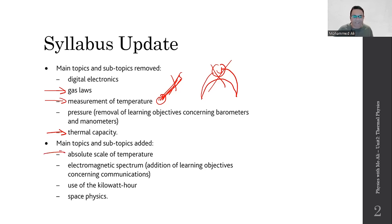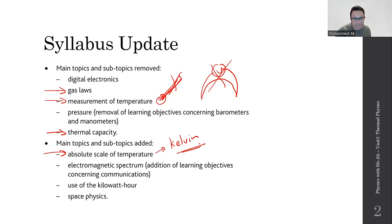They've also removed the mention of thermal capacity or heat capacity — not specific heat capacity, just heat capacity. The slight difference between them has been removed because it's kind of redundant: if you already know specific heat capacity, you can calculate heat capacity. They have added the absolute scale of temperature — in other words, they've added the unit called Kelvin. We'll discuss the difference between Kelvin and Celsius today.